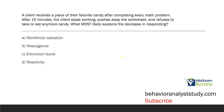The client receives a piece of their favorite candy after completing every math problem. After 15 minutes, the client stops working, pushes away the worksheet, and refuses to take or eat any more candy. What most likely explains the decrease in responding? The client is getting candy after every math problem — that looks like an FR1, or continuous schedule. After 15 minutes they don't work, push away the worksheet, and won't take candy. They've been working a long time on an FR1 schedule, and if they're not taking the candy anymore, they're likely satiated on that candy.